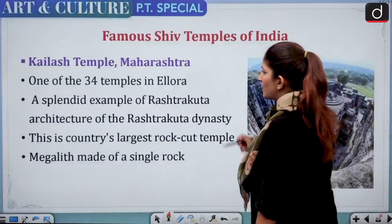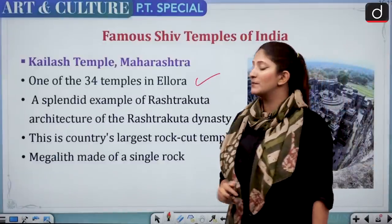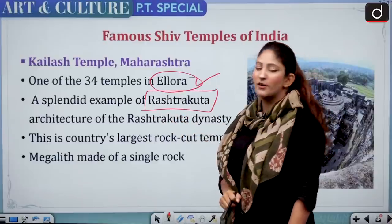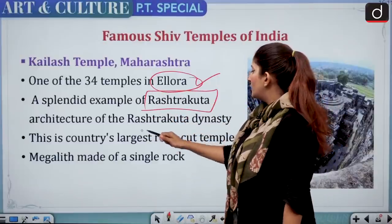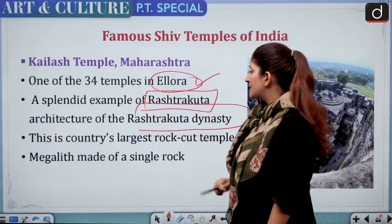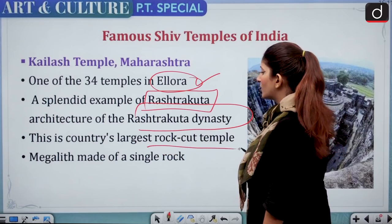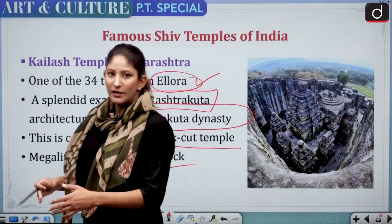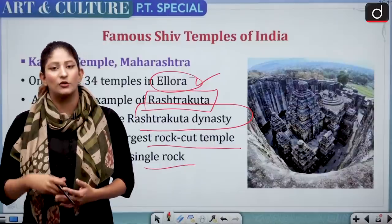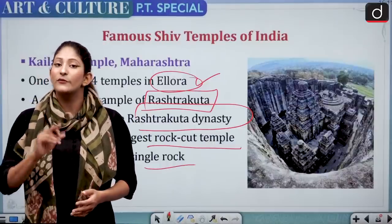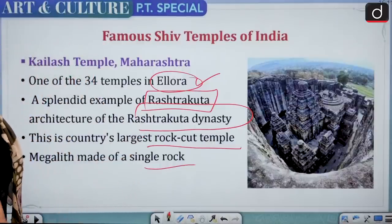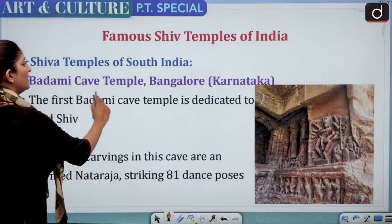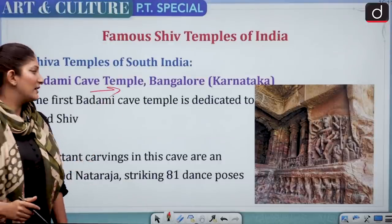Kailash Temple of Maharashtra is one of the 34 temples of Ellora and a splendid example of the Rashtrakuta style. It is the country's largest rock-cut temple — a megalith made of a single rock. Megalith means a huge stone structure or monument made from one rock.